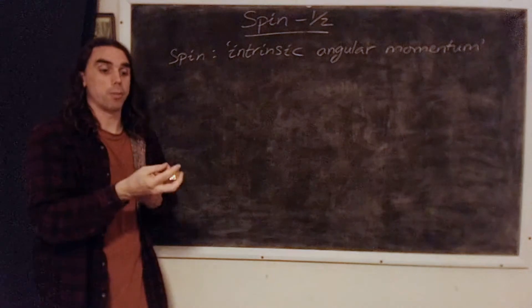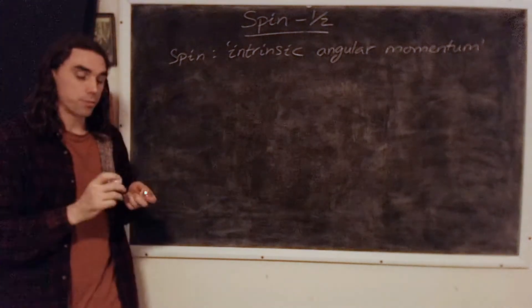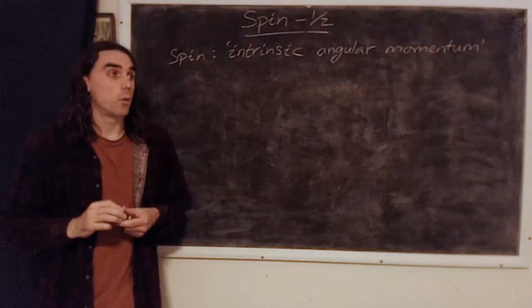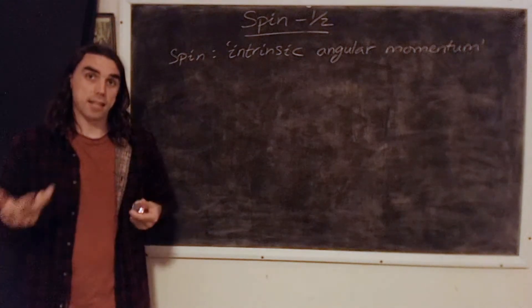But you can also have the Earth spinning on its own axis, and that's what intrinsic angular momentum is like. But things are going to get a little bit weird because while the Earth has a finite radius, the radius of the electron, as far as we can tell, is effectively zero.